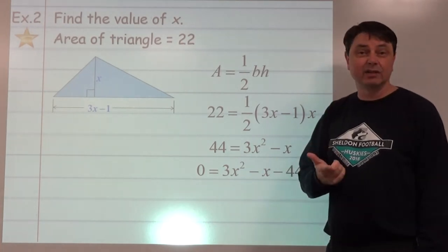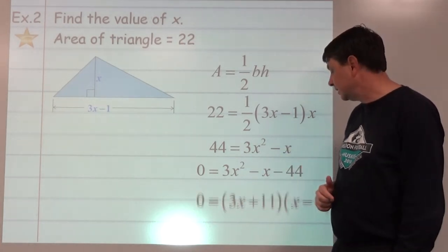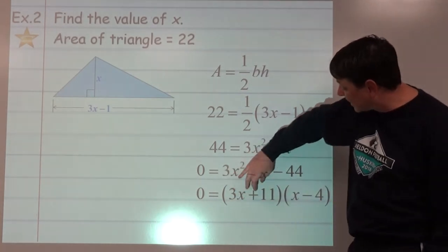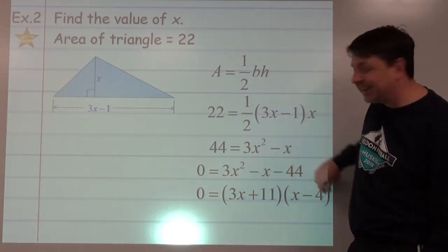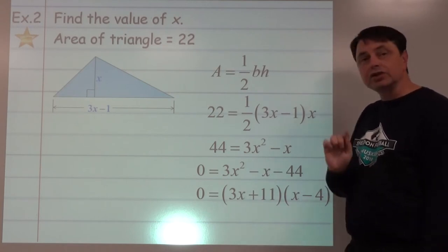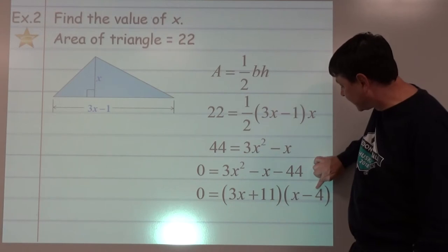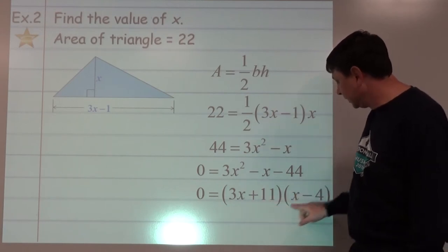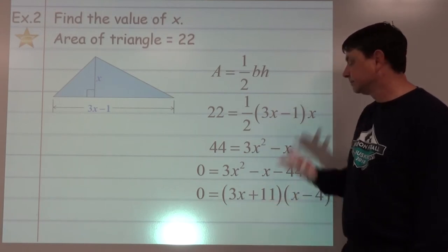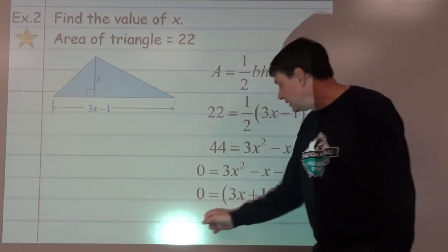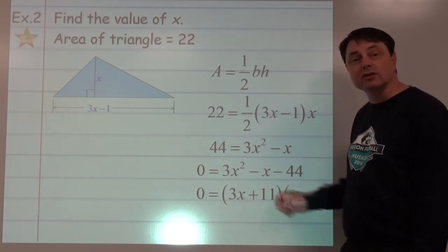It turns out that the correct factoring is going to be (3x plus 11)(x minus 4). Let's check that for a moment. Outside get negative 12x, inside plus 11x, that's minus 1x for the middle. If we now set both of these factors equal to 0, solve for x: 3x plus 11 equals 0, x minus 4 equals 0.